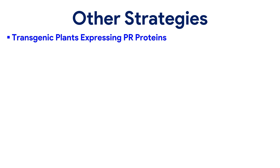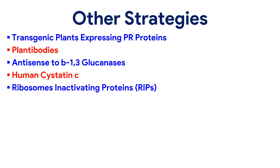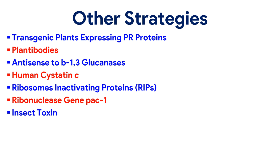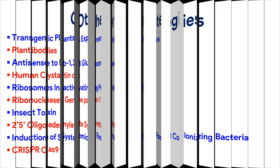Other strategies include transgenic plants expressing PR proteins, plant antibodies, antisense to β-1,3-glucanases, human cystatins C, ribosome-inactivating proteins (RIPs), nuclease gene PACT-1, insectotoxin, 2-5-oligoadenylate synthetase, induction of systemic resistance with root-colonizing bacteria, and CRISPR-Cas9.